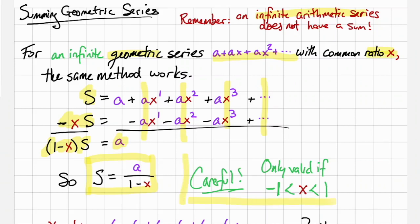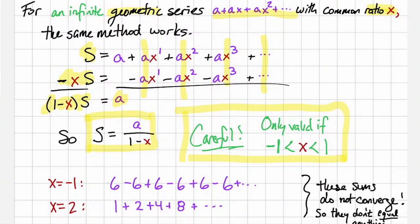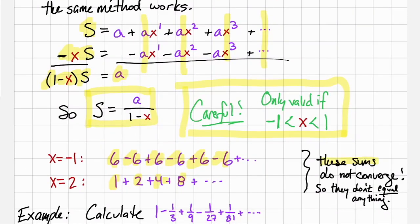You do need to be careful. This equation only works if x is strictly between negative 1 and 1. What happens if x is equal to negative 1? That would be 6 minus 6 plus 6 minus 6. And what about x equals 2? 1 + 2 + 4 + 8 + dot dot dot. Neither of these sums converge. So those sums by themselves, they do not equal anything.